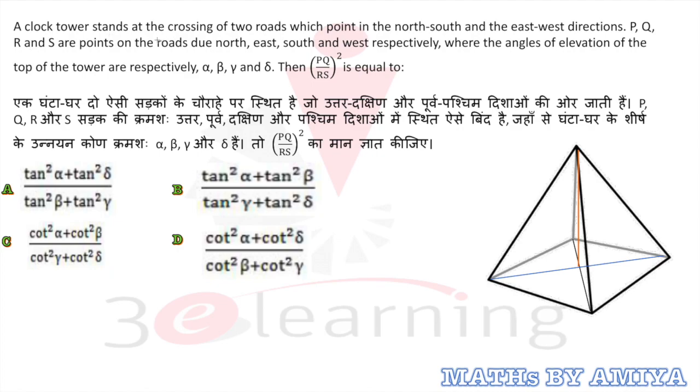A clock tower stands at the crossing of two roads. So say this one is A and B is a clock tower. Two roads which point in the north-south direction. Say this one is north, this one is south, this one is east, this one is west direction.